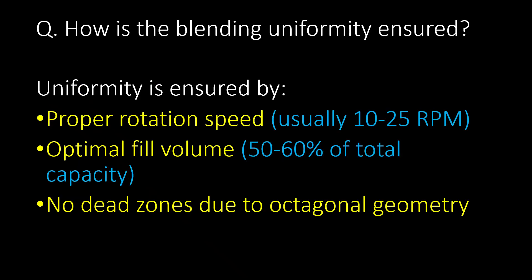How is blending uniformity ensured? Uniformity is ensured by proper rotation speed — usually 10 to 25 RPM — optimal fill volume of 50 to 60% of total capacity, and no dead zones due to the octagonal geometry.